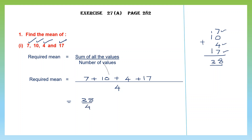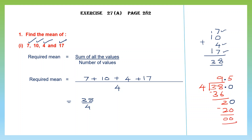Now we have to divide 38 by 4 to get our answer. 4 nines are 36, remainder 2. We put a decimal point and add zeros. Carry the decimal point on top, bring down the 0 — our number is 20. 4 fives are 20, remainder 0. So we've got 9.5. The required mean is 9.5.